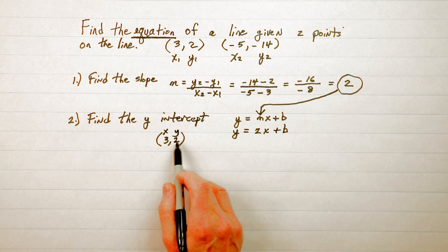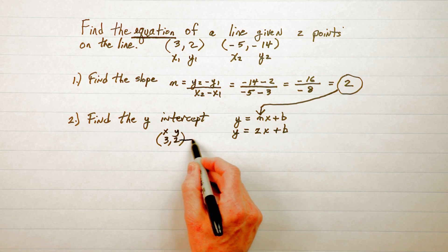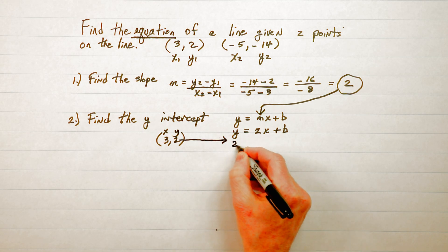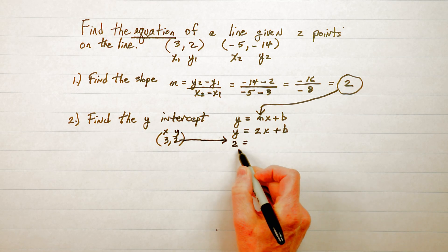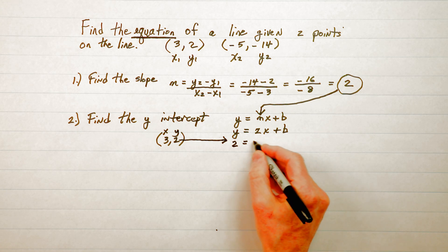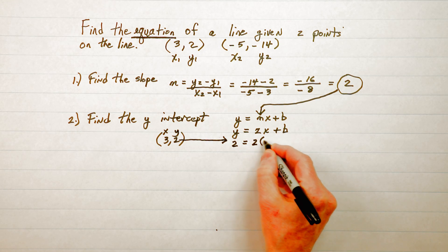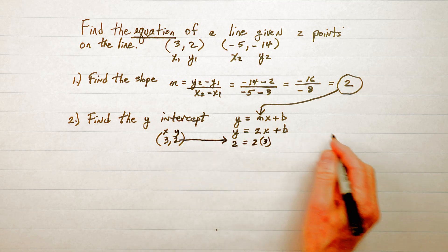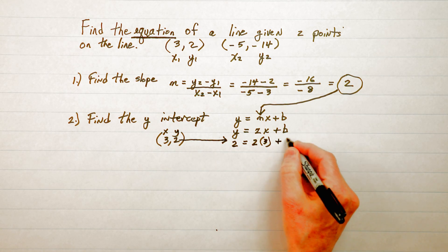We replace y with 2. So let's just take the 2 goes right over here in place of y and the x is 3 and that comes also from this ordered pair, x is 3, y is 2, and I'm going to bring down the b.